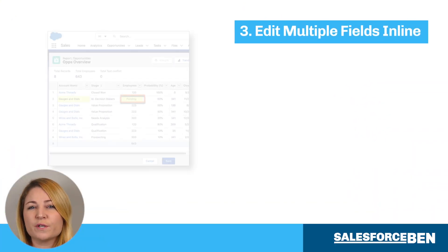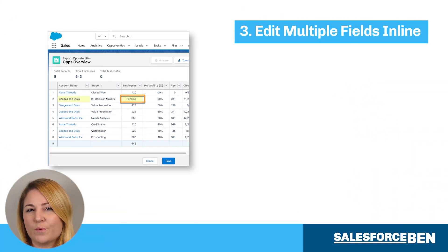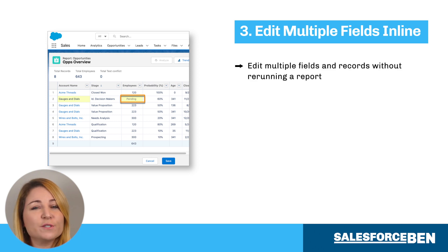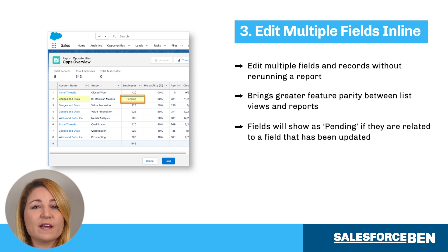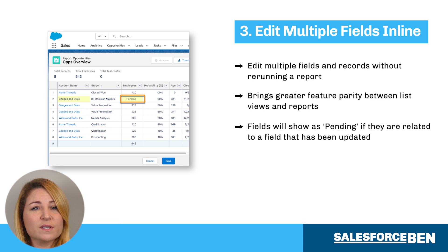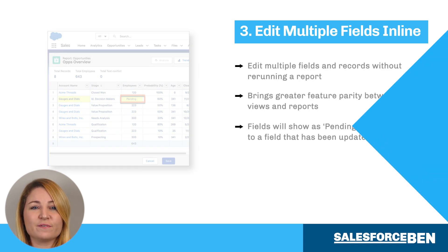Inline editing for reports just gets better with every release. You can now edit multiple fields and records without needing to rerun your report. This is a huge time saver and brings feature parity between list views and reports. Fields will show as pending if they are related to a field that's been updated — if you make a change to a field that will impact other fields, those other fields will be marked as pending until your changes are saved.